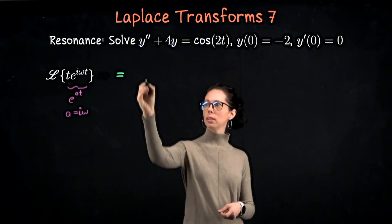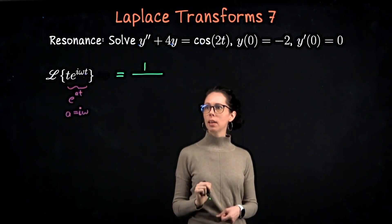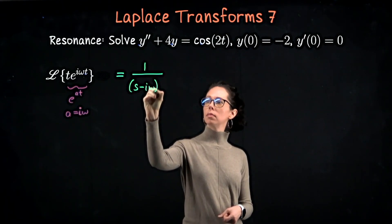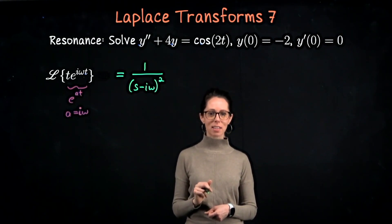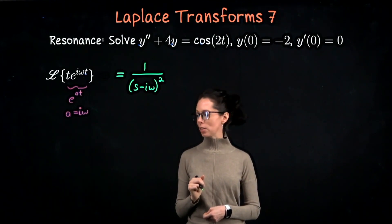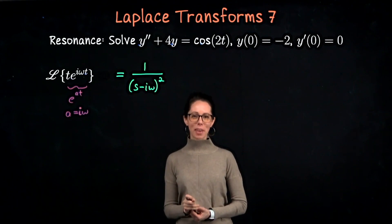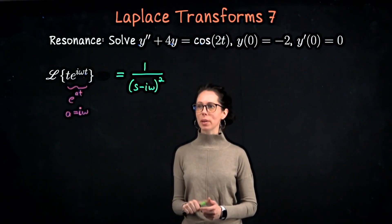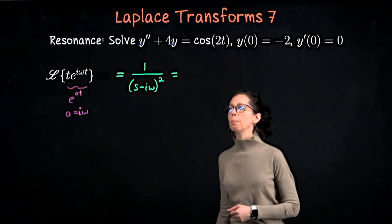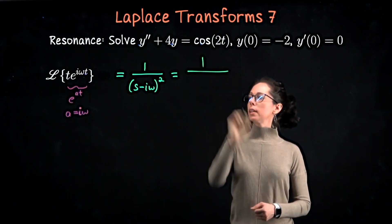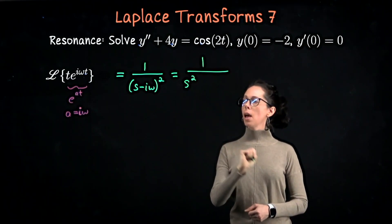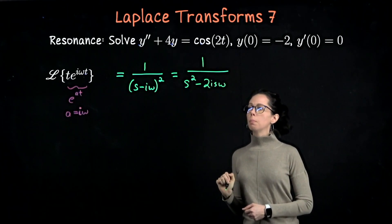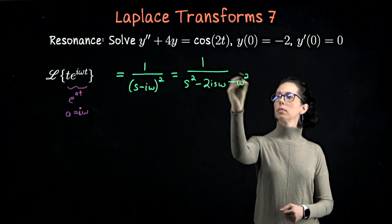So we have one over the quantity s minus i omega, squared. We're going to expand that denominator and then multiply by the complex conjugate to make the denominator real. Expanding gives s squared minus 2i s omega plus i squared omega squared, which is minus omega squared. The s squared and omega squared are the real components and we have this imaginary component in the middle.